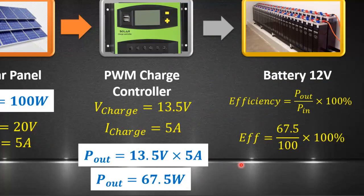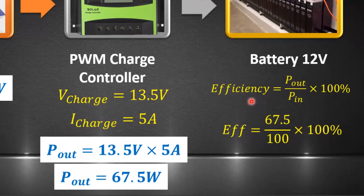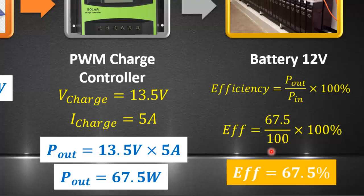Let's calculate the power conversion efficiency, which is output power divided by input power. By putting in the values, we can see that the power conversion efficiency of PWM is 67.5 percent.